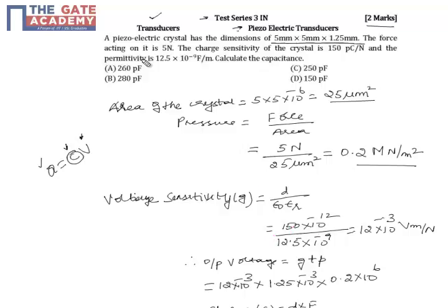The charge sensitivity is 150 pC/N, which is 150×10⁻¹² C/N (pico = 10⁻¹²), divided by the permittivity of the medium, 12.5×10⁻⁹ F/m. The relative permittivity of air is 1, so we do not multiply by an additional factor. The voltage sensitivity comes out as 12 mV per N/m².